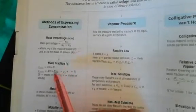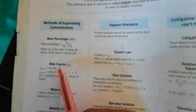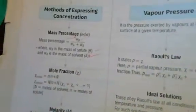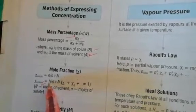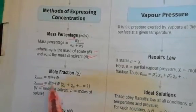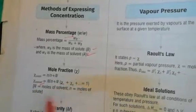Second is mole fraction, denoted by X. In this case, X equals n divided by (N + n), meaning the number of moles of solute or solvent upon the total number of moles in solution. Similarly, for solvent, it is the total number of moles of solvent upon the total number of moles of solution. Here N is moles of solvent and small n is moles of solute.